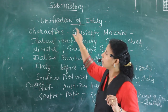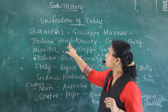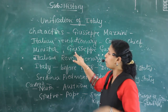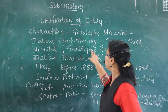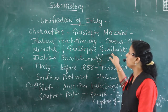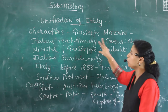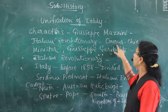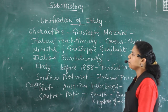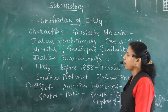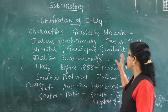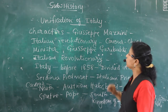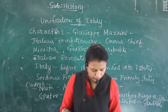Mazzini participated in the Italian unification and he was a revolutionary. Another important person was Giuseppe Garibaldi — Garibaldi was also a revolutionary. So two revolutionaries: Mazzini and Garibaldi. And Cavour — Cavour was the chief minister. These — the chief minister and two important revolutionaries — all participated in this Italian unification.